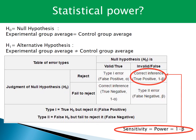A Type 1 error occurs when the null hypothesis is true but rejected, and a Type 2 error occurs when the null hypothesis is false but not rejected. Statistically, power is important to prevent Type 2 errors. Generally, if you have a power of 0.8 or more, you can think of it as a reliable statistical result.